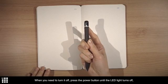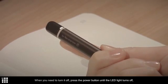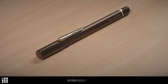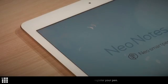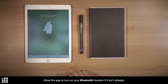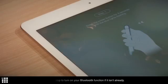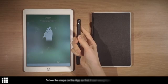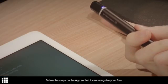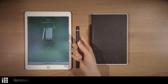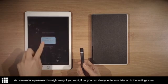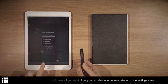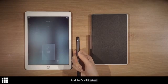When you need to turn it off, press the power button until the LED light turns off, or stop using it for a while. Now, let's open the app so you can register your pen. Allow the app to turn on your Bluetooth function if it isn't already. Follow the steps on the app so that it can recognize your pen. You can enter a password straight away if you want. If not, you can always enter one later on in the settings area. And that's all it takes.